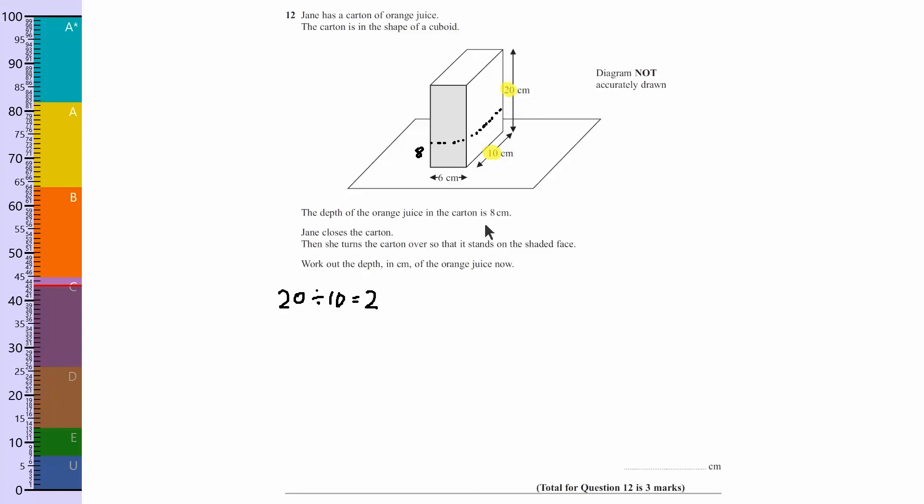Now, if the orange juice was 8 centimeters up before, then all I need to do is divide the 8 by 2, which gives me 4, which is actually the answer.